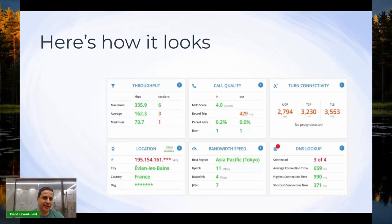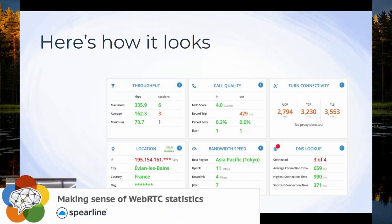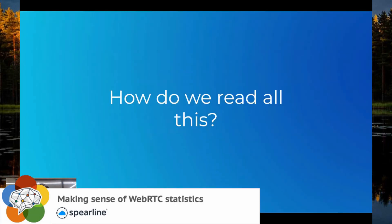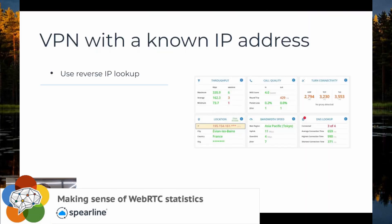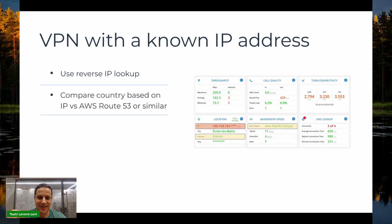At Spearline, we built such a tool called QualityRTC. It's a dashboard of the call, with numbers and colors — red is bad, green is good. Let me walk through an example. There's a VPN issue here. We start by looking at the location using reverse IP lookup, and sure enough the IP is a known VPN address. But there are other hints available even if the IP isn't recognized as VPN.